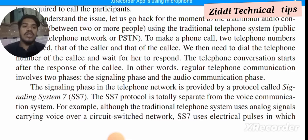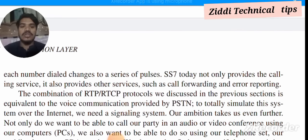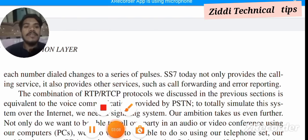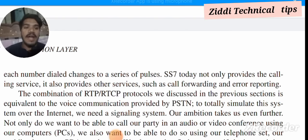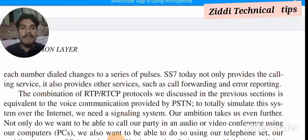For example, although the traditional telephone system uses analog signals carrying voice over a circuit-switched network, SS7 uses an electronic pulse and switch. Each number dialed changes to a series of pulses. SS7 today not only provides the calling service, it also provides other services such as call forwarding and error reporting. The combination of RTP and RTCP protocols discussed in the previous section is equivalent to the voice communication provided by the PSTN.